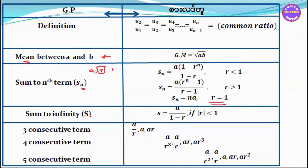Now, sum to infinity. Today we discuss how we have an infinite series. If we want the infinite series, we consider the sum to infinity. The sum to infinity S-infinity equals the limit of Sn as n approaches infinity. For a GP, the sum to infinity S equals A divided by (1 minus R), when the modulus of R is less than 1.